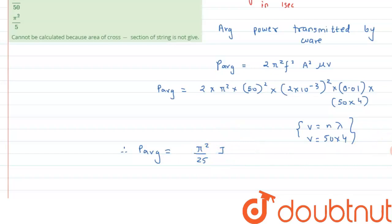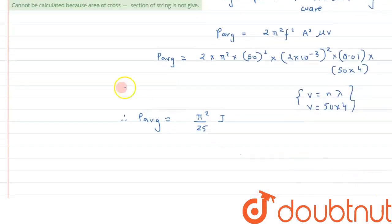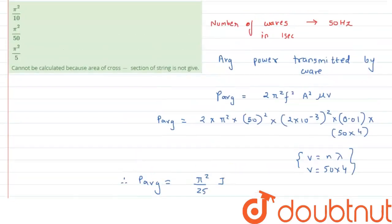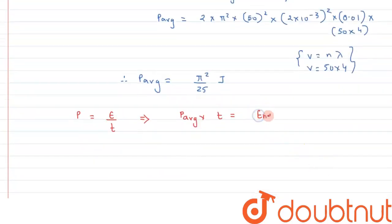So this is the average power we have got. But we are interested in finding the amount of energy transferred in 5 seconds. We know power is nothing but it is transfer of energy per unit time. So from here we can write P average × time will give us the energy that has been transferred. This will give us the value of energy.